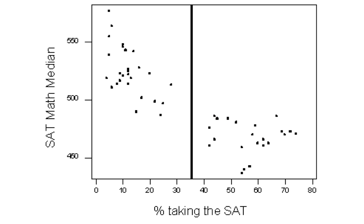Another visible feature of the data is the presence of a gap in the middle of the scatter plot, which creates two distinct clusters in the data. This suggests that maybe there is a lurking variable that separates the states into these two clusters, and that including this lurking variable in the study, as we did by creating this labeled scatter plot, will help us understand the negative trend.